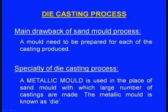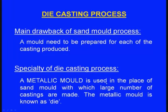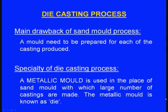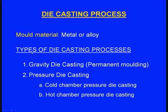To overcome these drawbacks, die casting has been developed. In the die casting process, instead of a sand mould, a metallic mould is used, with which a large number of castings are made. We are not going to break this metallic mould after solidification — the same mould will be used again and again for making several castings. This metallic mould is known as a die, and the mould material is metal or alloy.